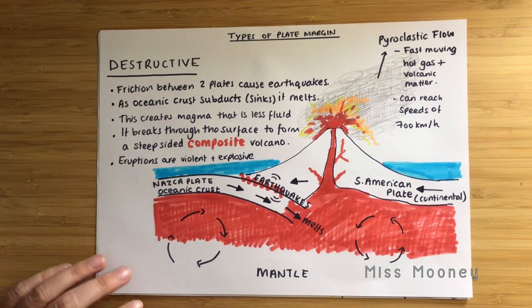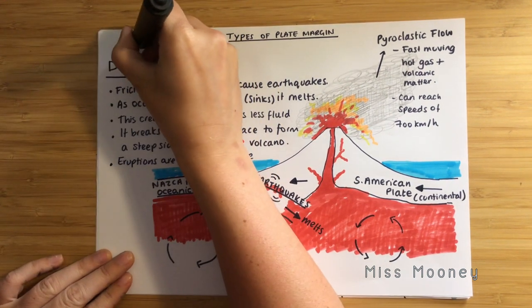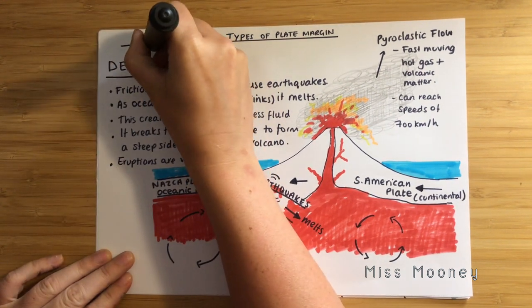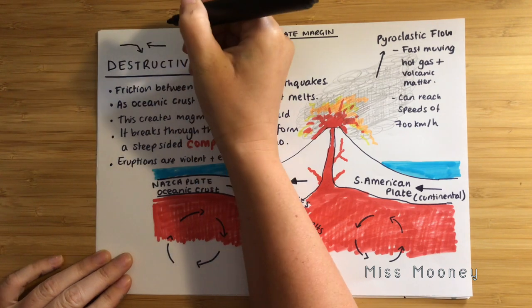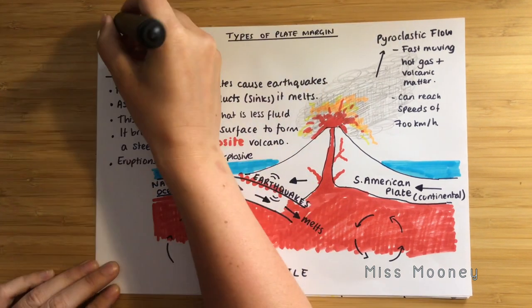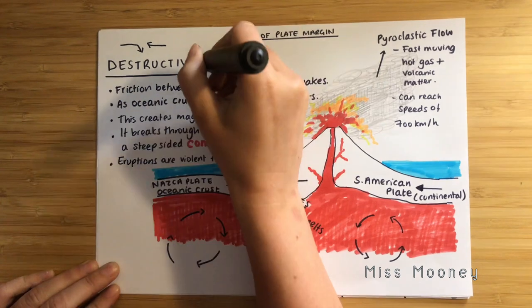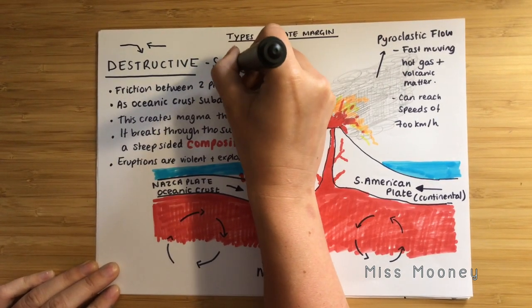To recap: at a destructive plate margin, an oceanic plate subducts or sinks underneath a continental plate. At a destructive plate boundary, we get composite volcanoes and we get earthquakes.